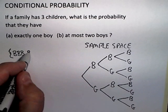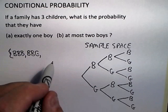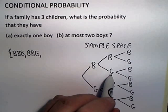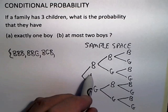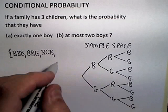Or boy, boy, girl—the first two are boys, the third is a girl. Boy, girl, boy. Boy, girl, girl.